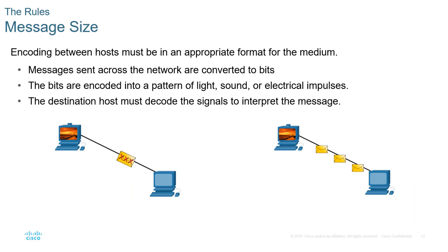Message size: we have to make sure the formatting and size are appropriate to the media. The message sent across the network has to be converted into a digital signal so it can travel across the media — whether copper cable, fiber optic, or wireless. We may have to break data down into more manageable chunks. The message size may need to be smaller to fit on the wire, because you cannot send a large package if the media cannot handle that size.